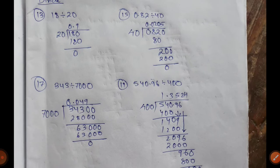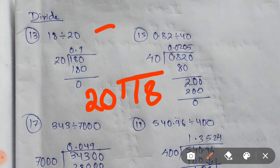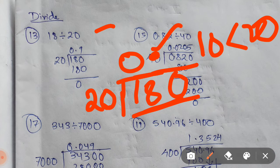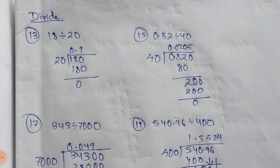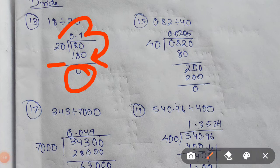Let us see another question in the same exercise, question number 13. You have to divide 18 by 20. You will write 18 first, then 20. Now 18 is smaller than 20, so how is division possible? We have to increase the value of 18 by putting a decimal point, which gives an extra 0. Whenever a dividend is smaller than a divisor, always give a point to increase its value. So 18 turns into 180. Now 20 times 9 is 180, and if you subtract you will get 0. So your final answer will be 0.9.